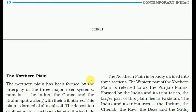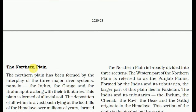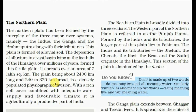Now we will talk about the Northern Plains. The Northern Plains have been formed by the interplay of three major river systems — namely the Indus (Sindhu), the Ganga, and the Brahmaputra — along with their tributaries. These plains are formed of alluvial soil. The deposition of alluvium in a vast basin lying at the foothills of the Himalaya over millions of years has formed this fertile region.